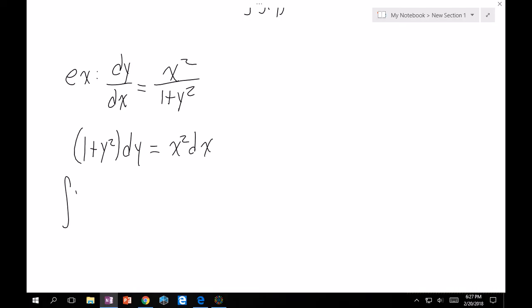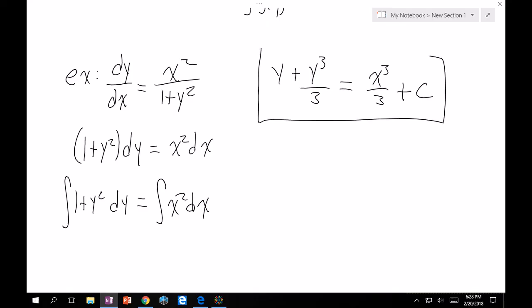If I integrate both sides, I'll get that integral of 1 dy is just y, plus integral of y squared is y cubed over 3. And then, on the right-hand side, same thing, x cubed over 3. And then, I'm forgetting something, which is my plus c. And so, this is the solution to this ODE.